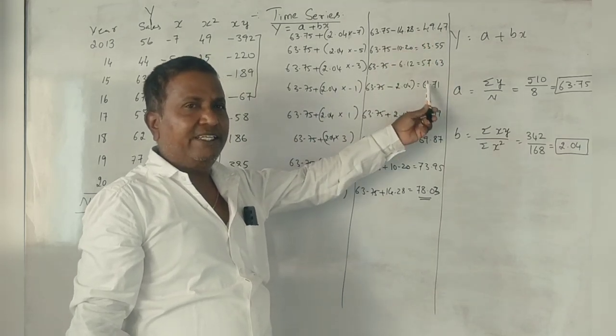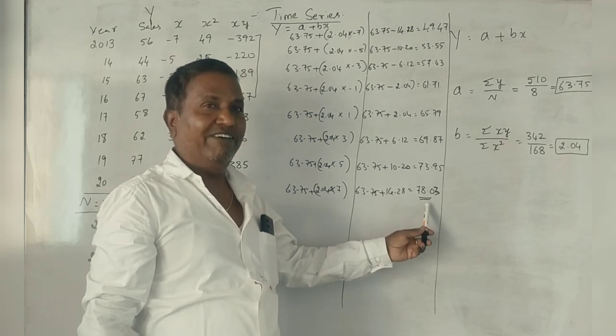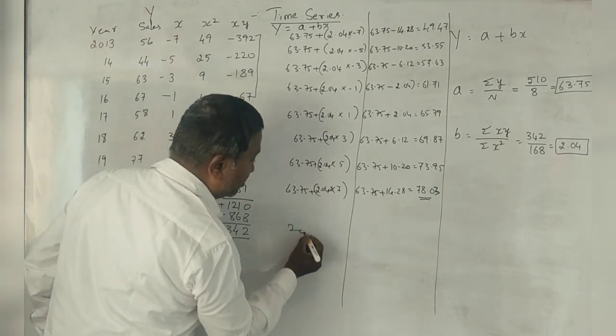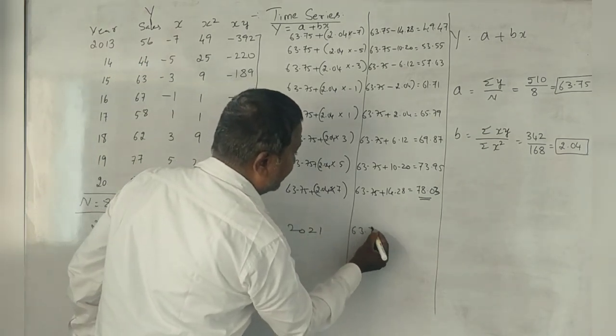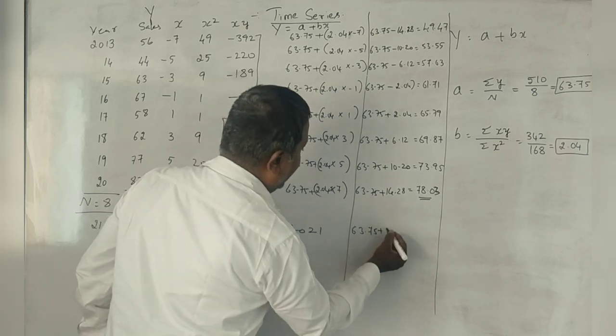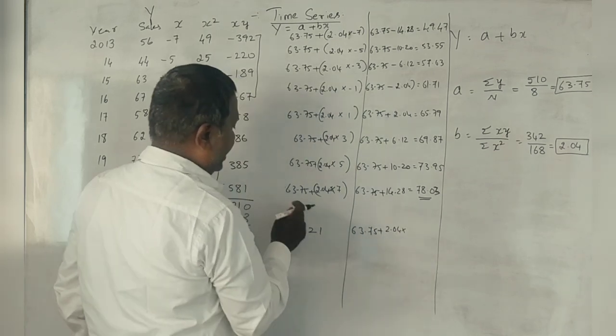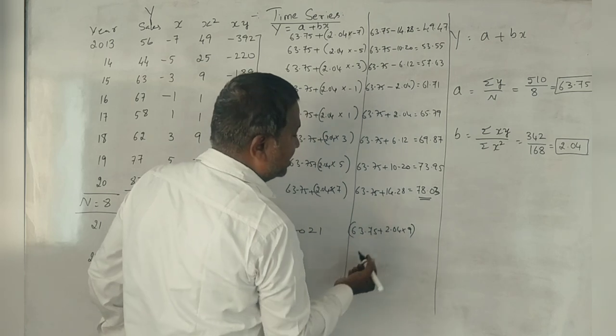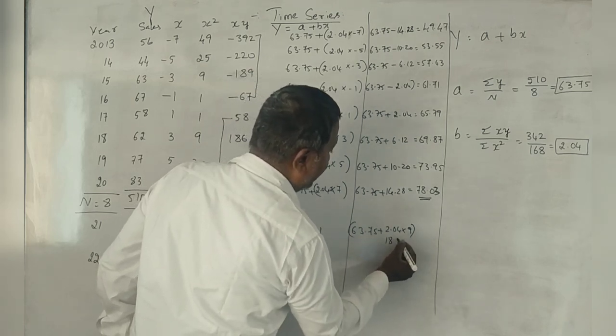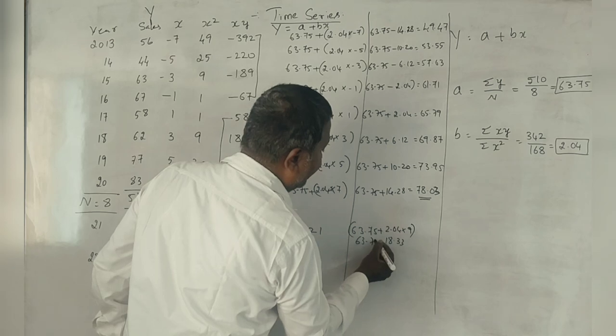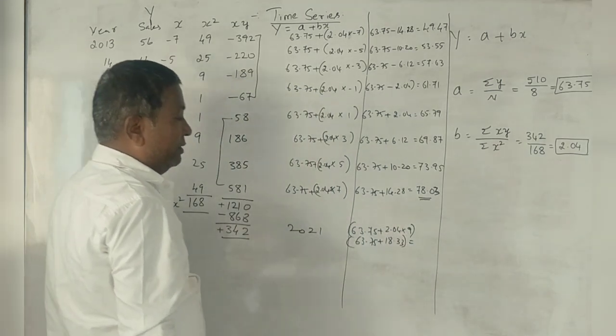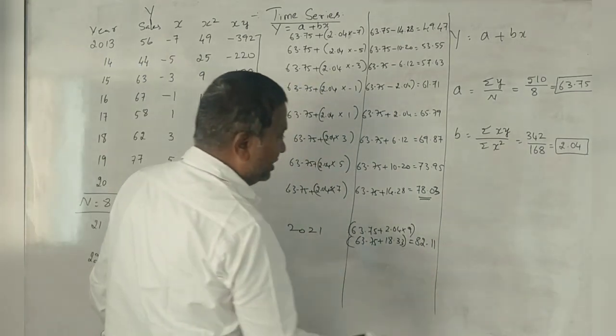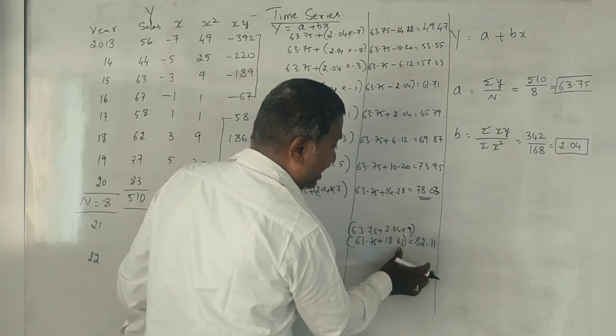Now when you want to estimate for 2021, for the year 2021: 63.75 plus 2.04 into 9 equals 63.75 plus 18.36 equals 82.11. This is the forecast for 2021.